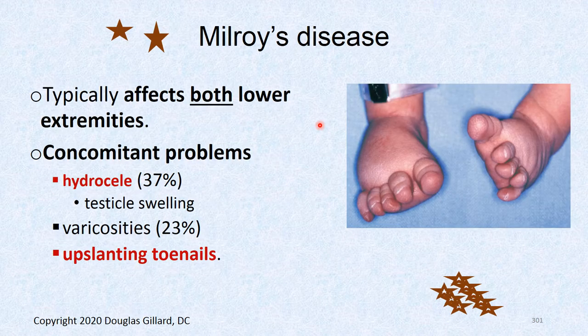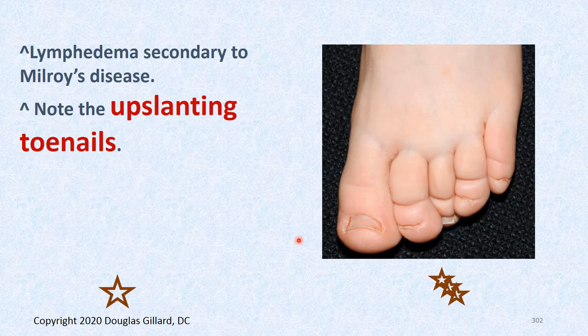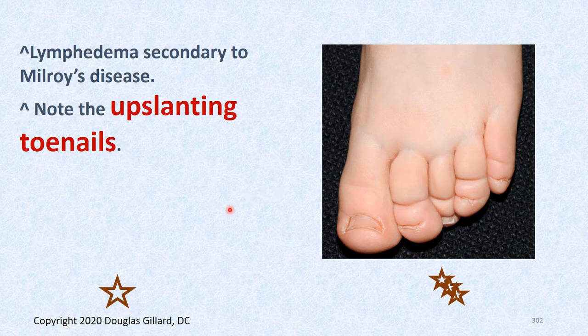Milroy's disease typically affects both lower extremities. Kids with it often have other problems — almost 37% have hydrocele, swelling in the testicle, and varicosities. One sign is they have these weird upslanting toenails — the nail plate is concave, almost spooned. Their toes are quite swollen too — like little sausages. That's Milroy's disease.